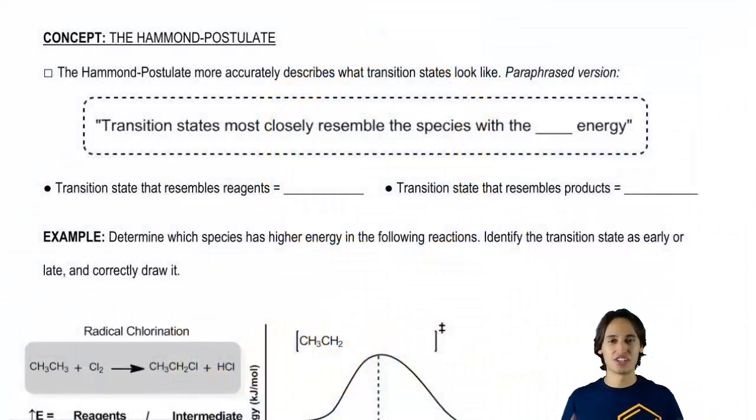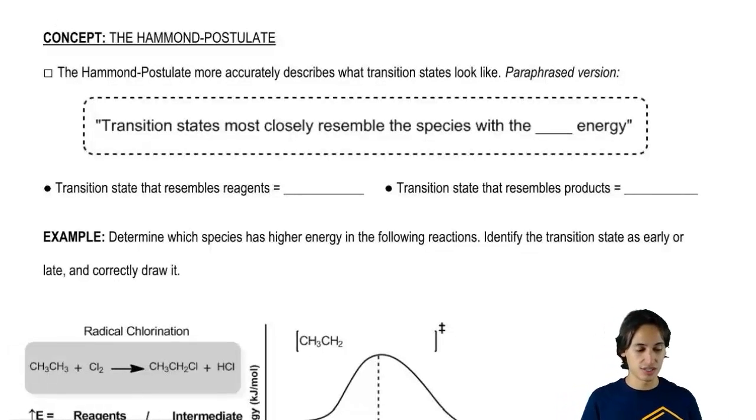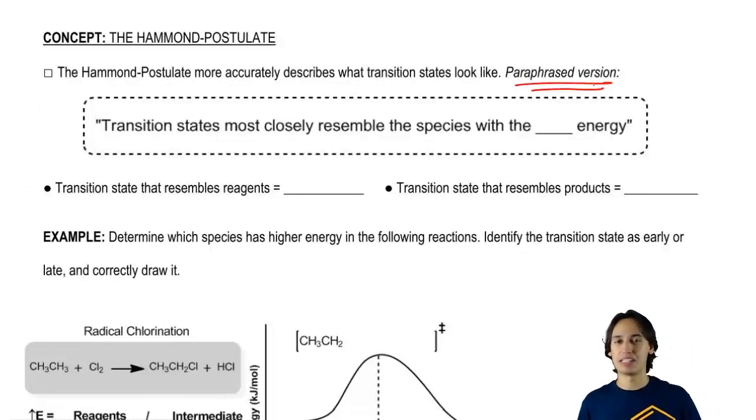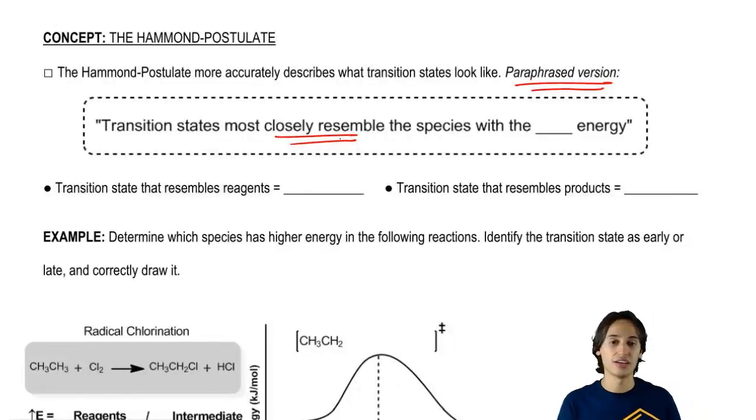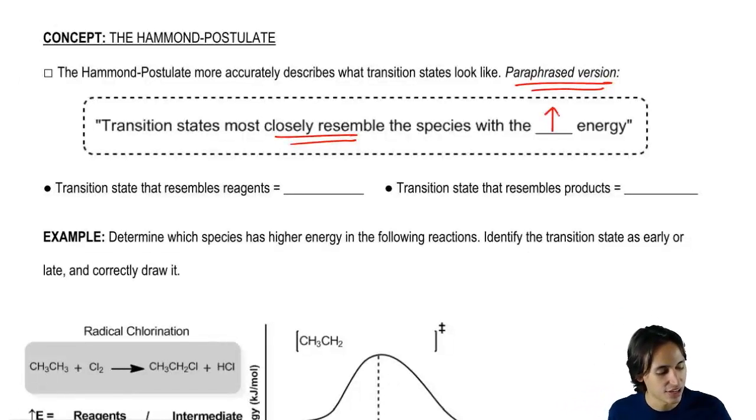So what does the Hammond postulate say? It has to do with transition states. And the paraphrased version of it, the one that I think makes the most sense, is that transition states are going to most closely resemble, they're going to look the most like the species with the highest energy.